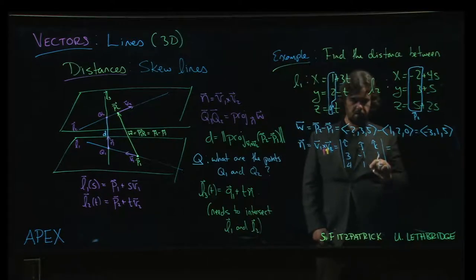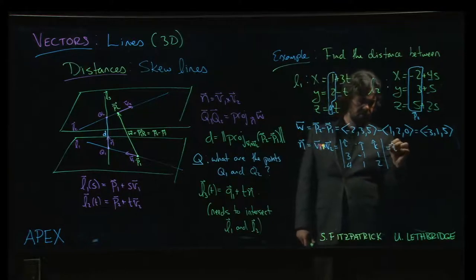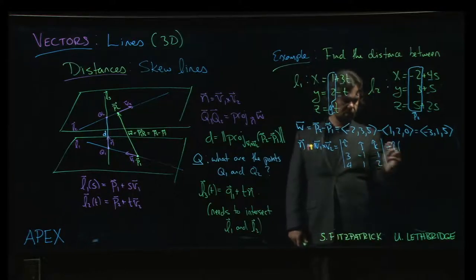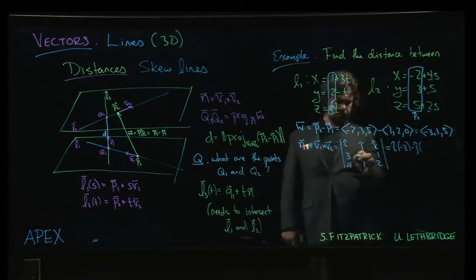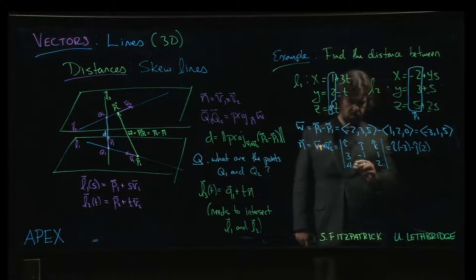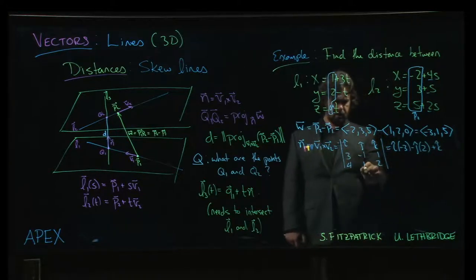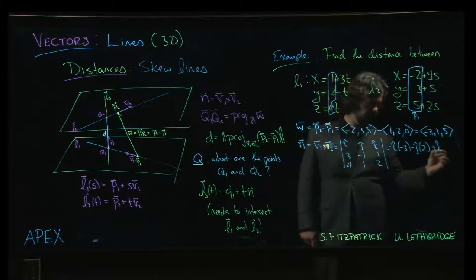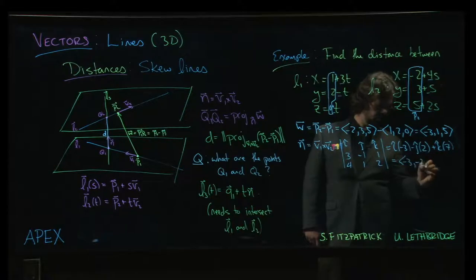I am going to skip the arithmetic steps this time just to move things along here. Minus 2 minus 1 is minus 3. And then we have 6 minus 4, that is 2. And then for k, we have 3 minus minus 4, so 3 plus 4 is 7. So we get minus 3, minus 2, and 7.